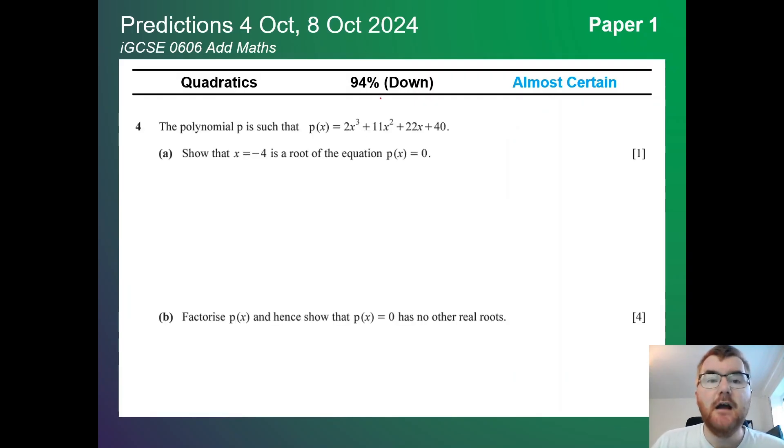On to quadratics. We're at 94%, so slightly down here. This can appear in quite a few different forms. In this one for example we're showing that x equals minus 4 is a root of the equation and then using that to factorize. Even though this is a cubic using factor theorem and remainder theorem ideas, quadratics is seeping in when we look at part b.